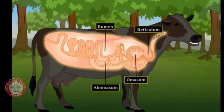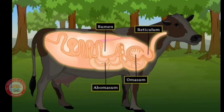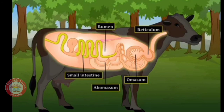The re-chewed food is swallowed and sent into the omasum, the third and smallest chamber, to absorb excess water and break down food into smaller pieces. It is then sent to the abomasum, the true stomach. The digested food then goes into the small intestine, where absorption of nutrients takes place.